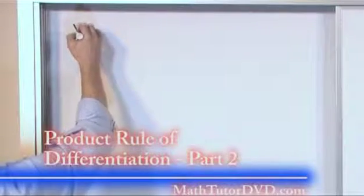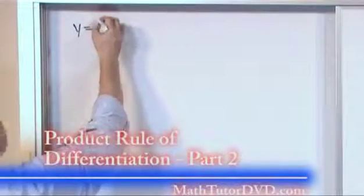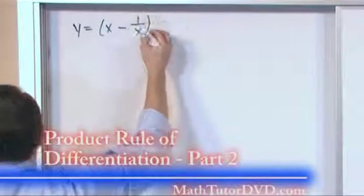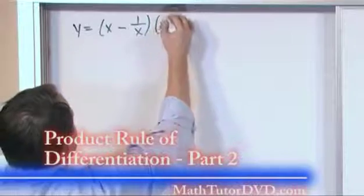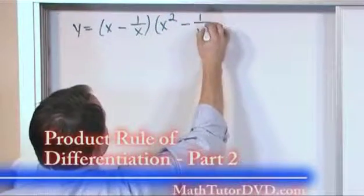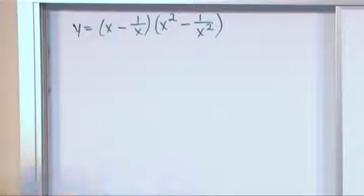Our next problem is going to be y equals x minus 1 over x times x squared minus 1 over x squared. Same exact deal.